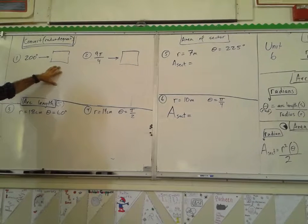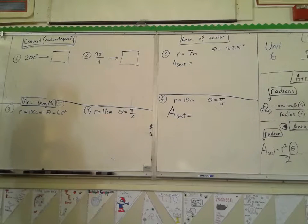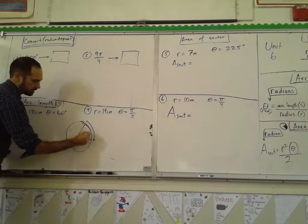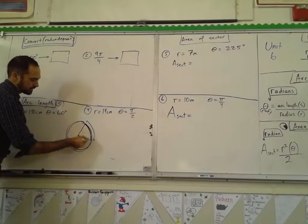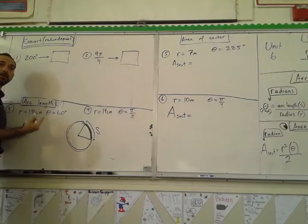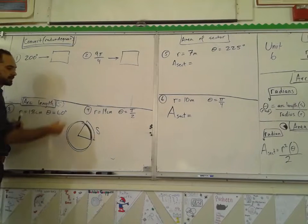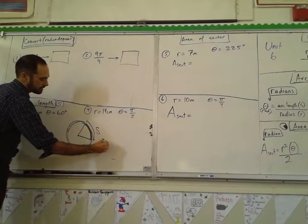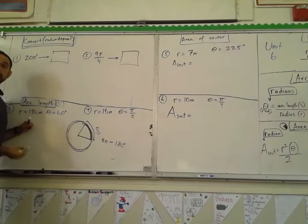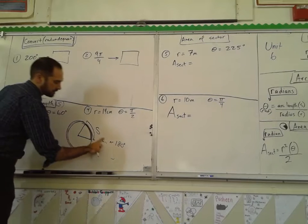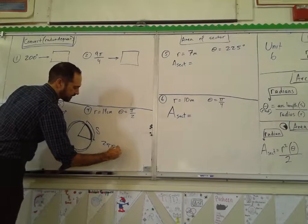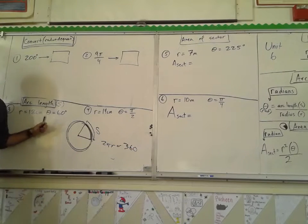We want to get comfortable with radians, which we'll see a lot next year, and arc length. When we're talking about arc length, we have a central angle and the arc length is how long this arc is — always denoted by s. All the way around is either 2π or 360 degrees.